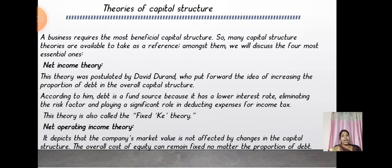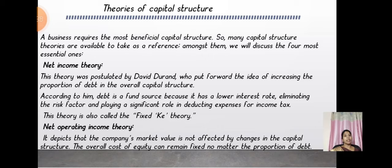Under theories of capital structure, we have four famous theories. The first is the Net Income Theory, postulated by David Durand, who put forward the idea of increasing the proportion of debt in the overall capital structure. According to him, debt is a good fund source because it has a lower interest rate, eliminates risk, and plays a significant role in deducting expenses for income tax. This theory is also called the fixed KE theory.